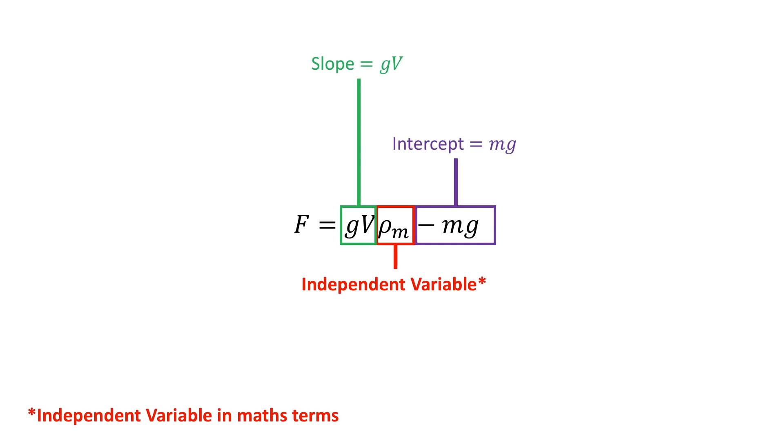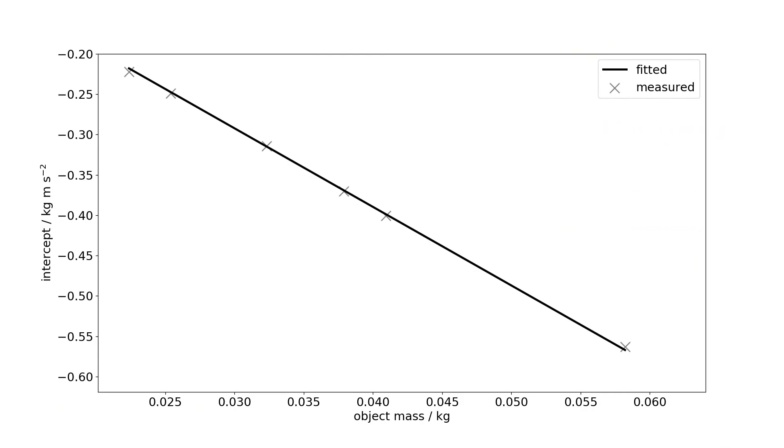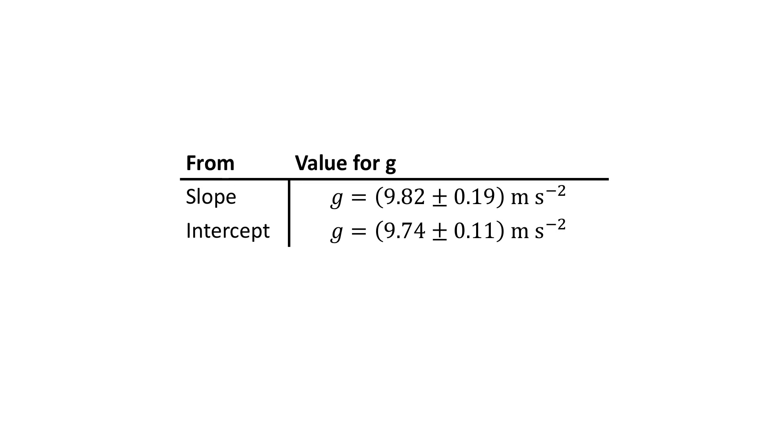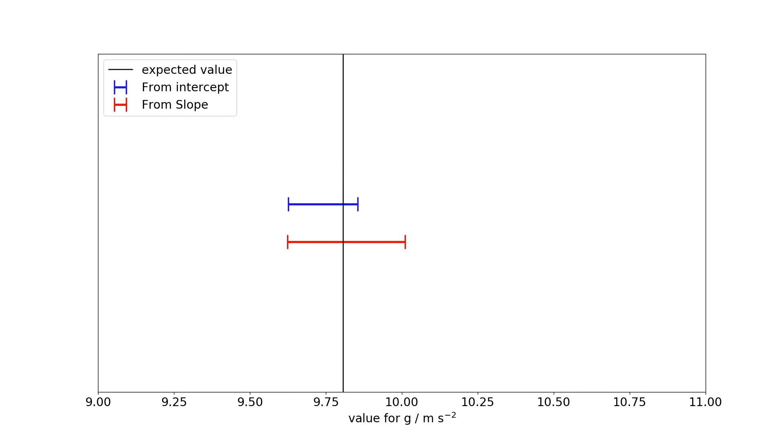We then move to the intercept. Our prediction states that if we plot the intercept against the object's mass, then the slope should be minus g, and that is this plot. On screen I will now show the fitting parameters with their uncertainty, and here we show that the experimentally determined values are in agreement with each other and the expected value for g.